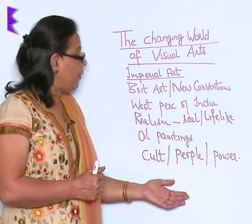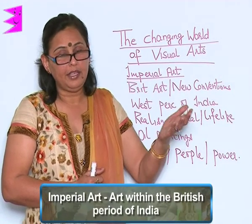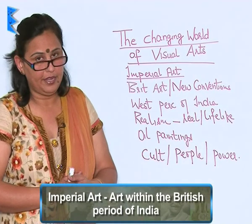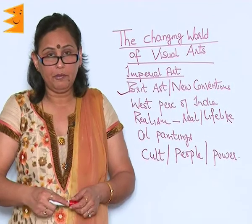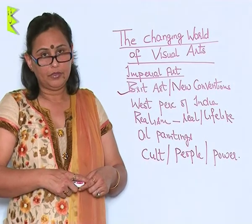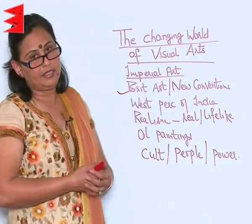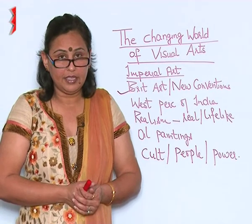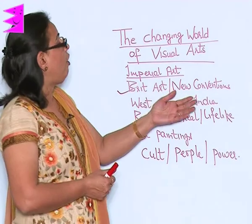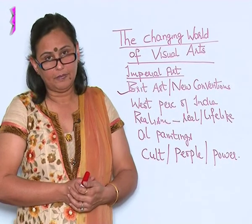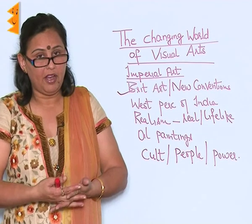So let us first of all talk about imperial art. Imperial art means the art within the British period of India. The British artists came along with traders and rulers to India. As these people came to India, so came along the artists, and these artists gave to the Indian artists new conventions of painting, new forms of visual arts, and sometimes it got mixed and gave a new form of art in India.